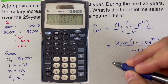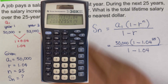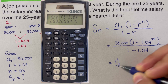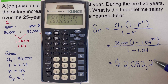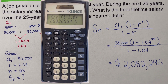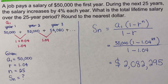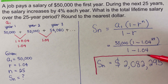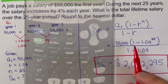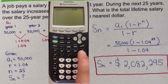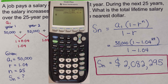The total lifetime salary over the 25-year period comes out to $2,082,295. We round to the nearest dollar, so we don't include the decimal values. This is the total lifetime salary for this job over 25 years. We can also verify this using the TI-84 calculator, and as you can see, the answer is still the same: $2,082,295.